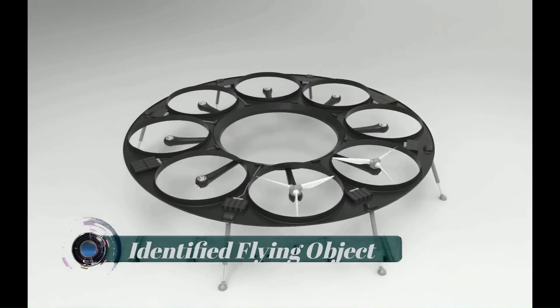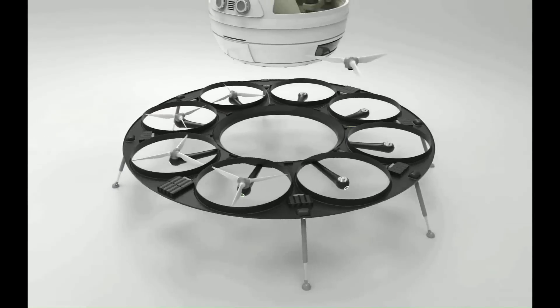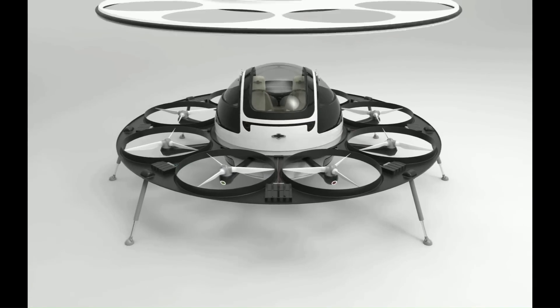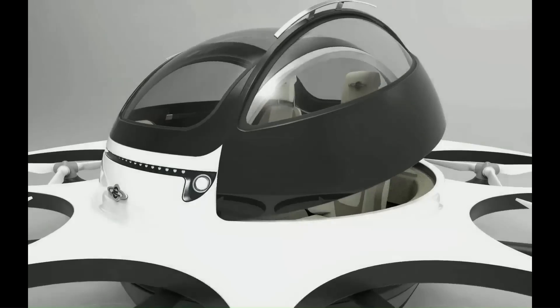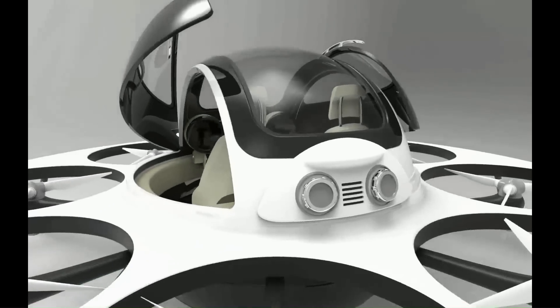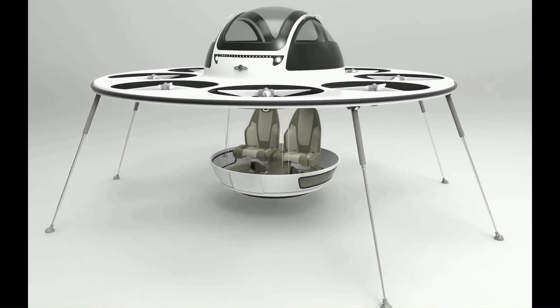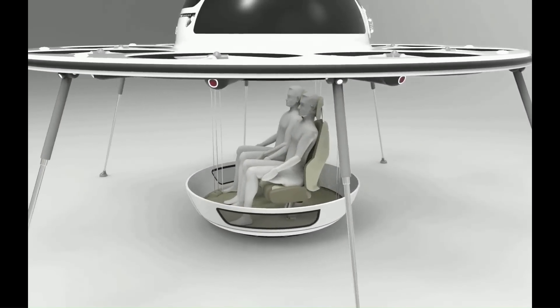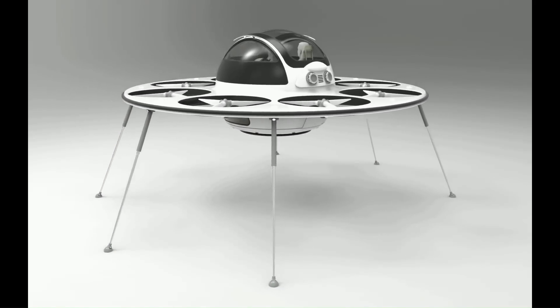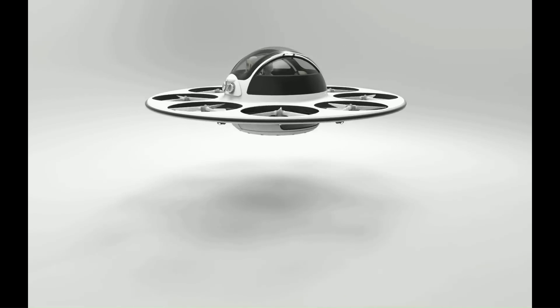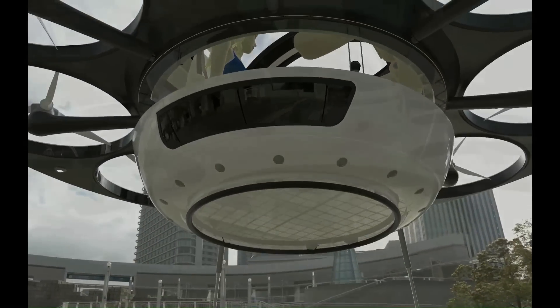IFO, the Identified Flying Object, designed by Pierpaolo Lazzarini from Italian company Jet Capsule, is a proposed two-seater drone/copter vehicle. The chassis, composed of a main central capsule cockpit, measures two meters in diameter and is surrounded by a carbon fiber disc with an overall dimension of 4.70 meters.